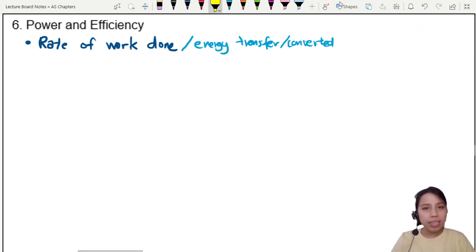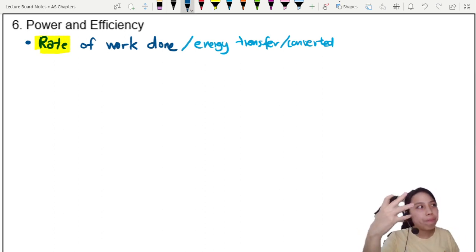So the important keyword here is the word rate. What is rate? Rate, whenever you see it, is like a per unit time, force per unit time, those kind of things. So the equation that we're going to start off with here is power rate of work done.